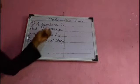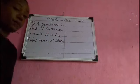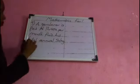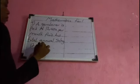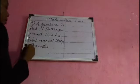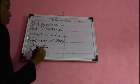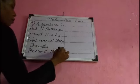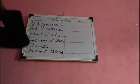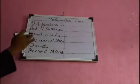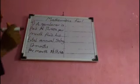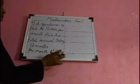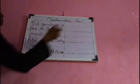Since there are 12 months in a year, and the monthly salary is 12,400 naira, we multiply the monthly salary by 12 to find the total annual salary.